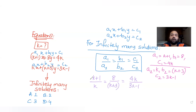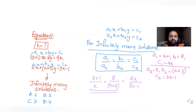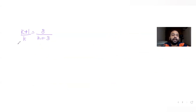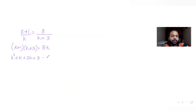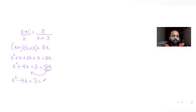Equating the first two ratios: (k+1)/k = 8/(k+3). Solving this gives (k+1)(k+3) = 8k, which expands to k² + k + 3k + 3 = 8k. Rearranging: k² + 4k + 3 − 8k = 0, so k² − 4k + 3 = 0.